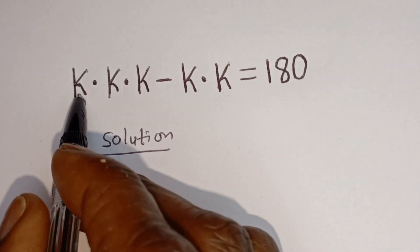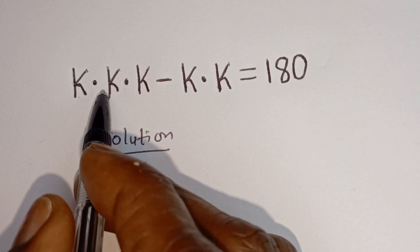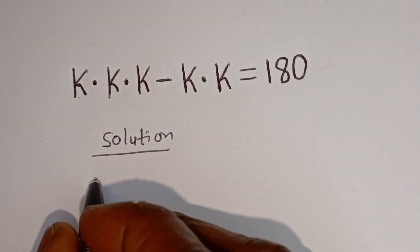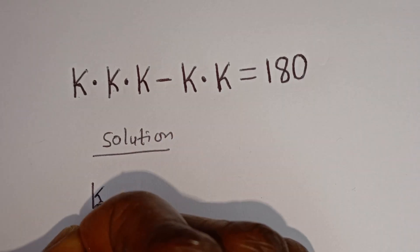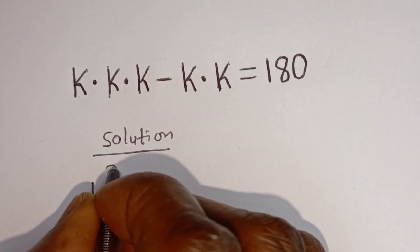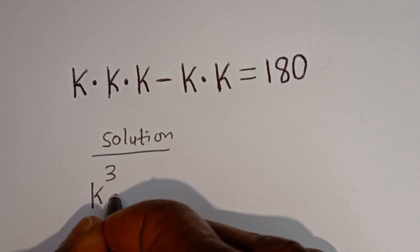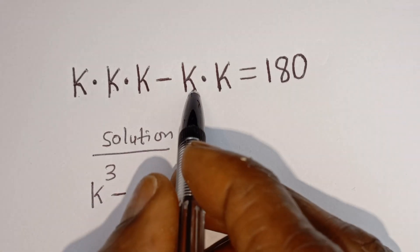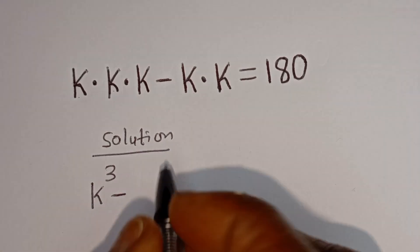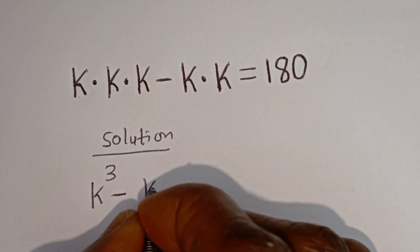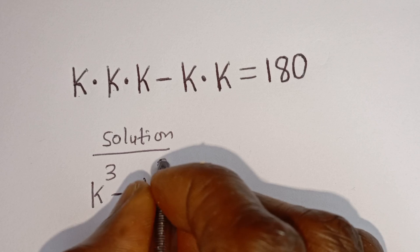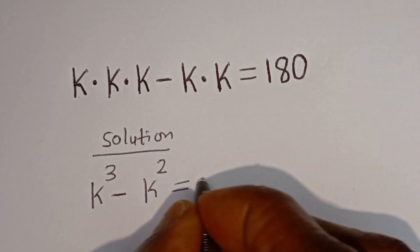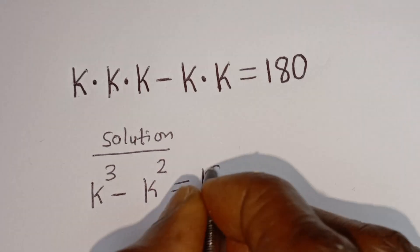Now here we have K multiplied by K multiplied by K. This is K to the power of 3. Minus here we have K multiplied by K. This is K squared, is equal to 180.